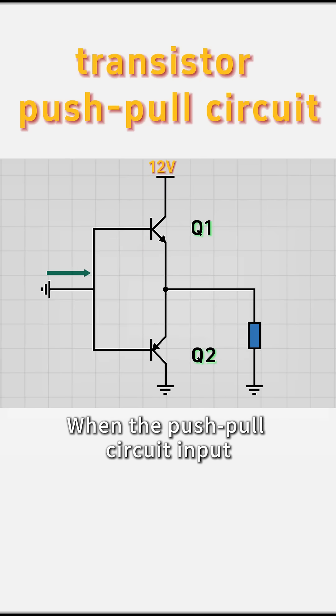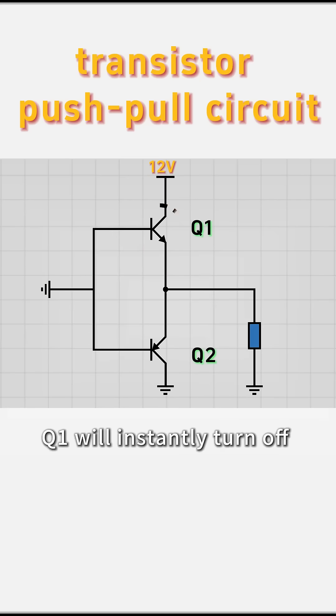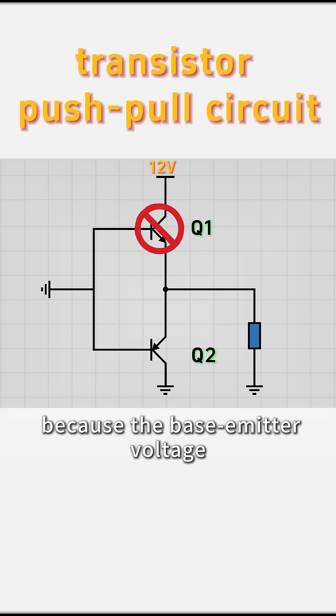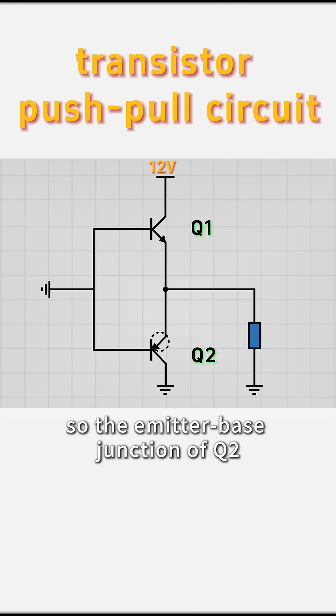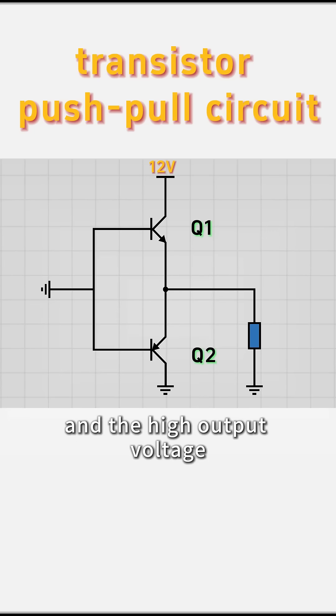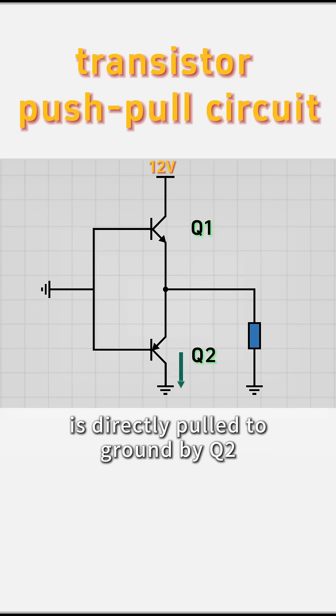When the push-pull circuit input is at low voltage, Q1 will instantly turn off because the base-emitter voltage is suddenly reverse-biased. At this point, the output voltage remains high, so the emitter-base junction of Q2 becomes forward-biased, and the high output voltage is directly pulled to ground by Q2.